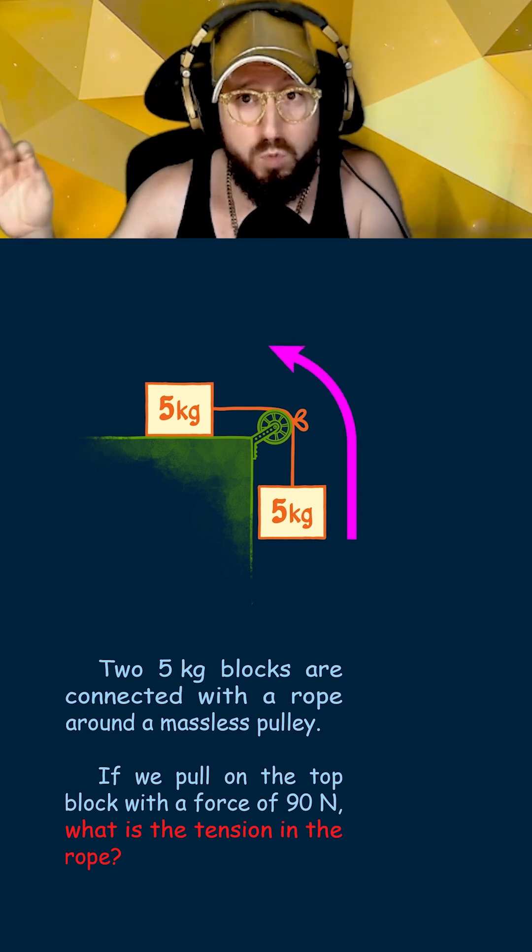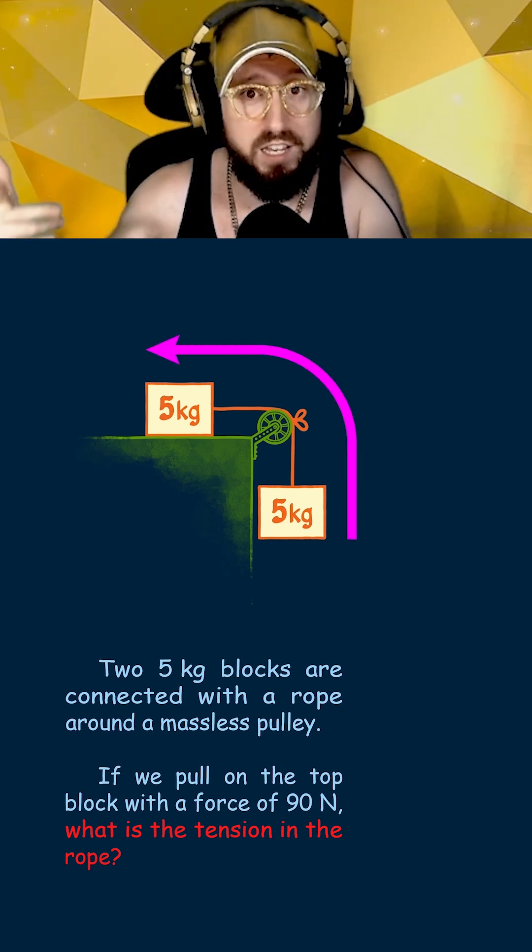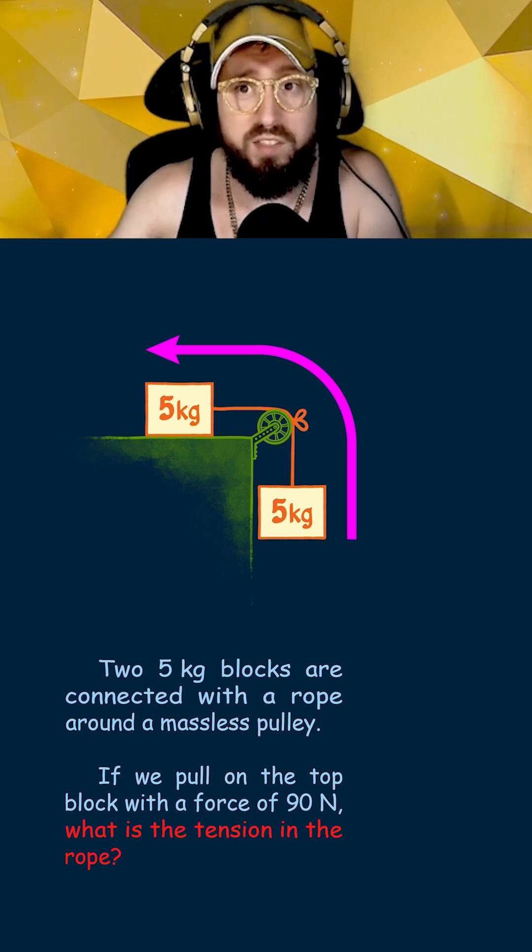In this case, I like to draw an arrow for the combined movement of both blocks, since they are attached together by a rope. Here, we're going to call moving counterclockwise as positive.